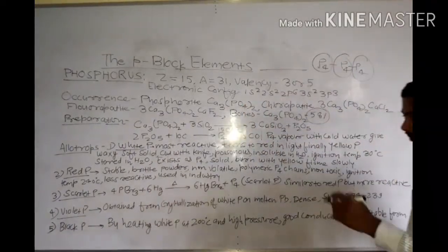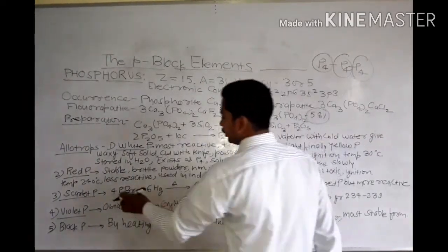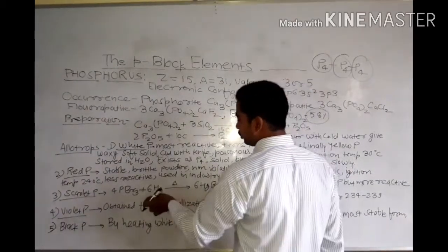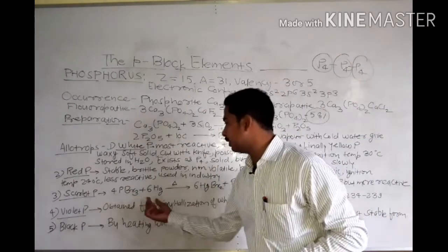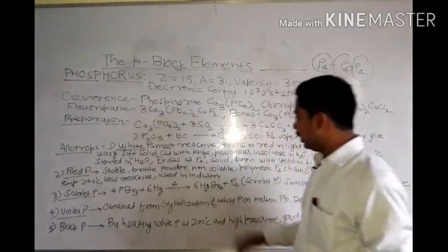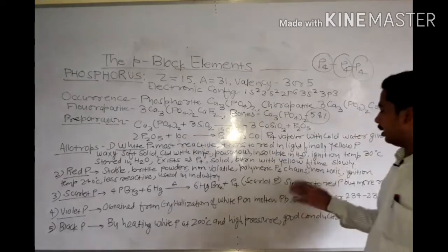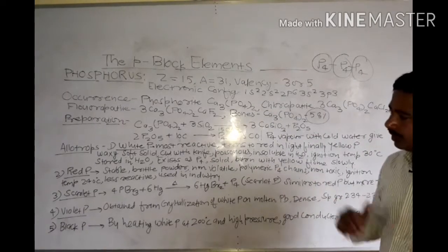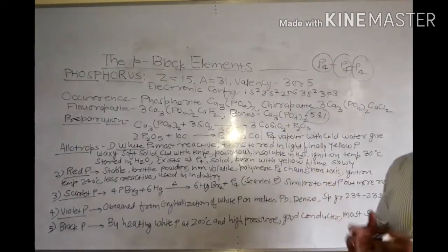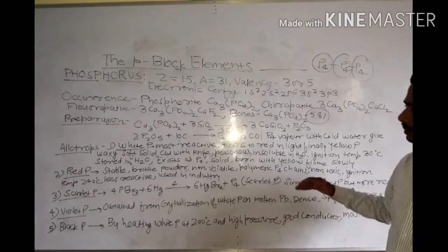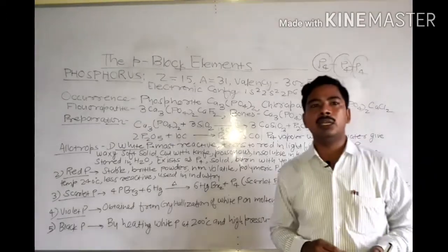Next is scarlet phosphorus. Scarlet phosphorus is prepared by the reaction of phosphorus tribromide PBr3 with mercury on heating. When PBr3 is heated with mercury, it gives mercury bromide and scarlet phosphorus. Scarlet phosphorus is similar to red phosphorus but has more reactivity than red phosphorus.